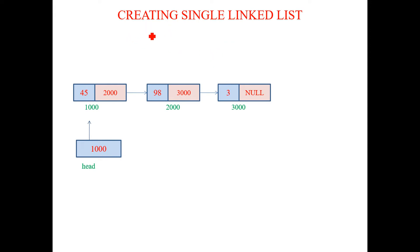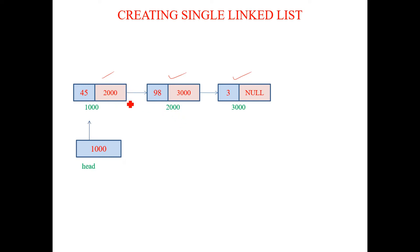Now we create a full singly linked list with three nodes: first node at address 1000 with data 45, second at 2000 with data 98, and third at 3000 with data 3. The first node's link stores 2000, the second's link stores 3000, and the last node's link is null.